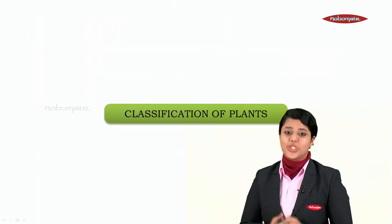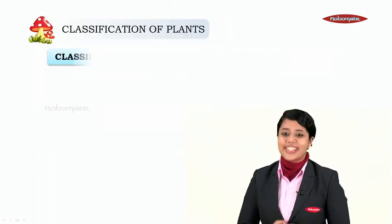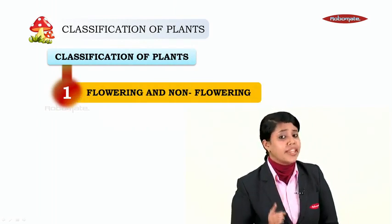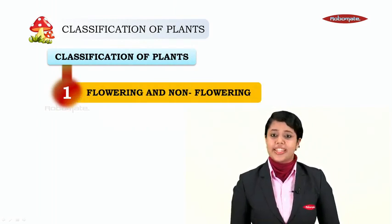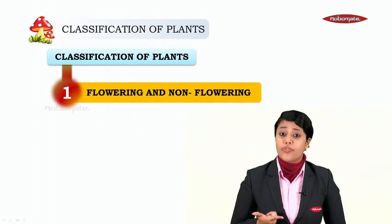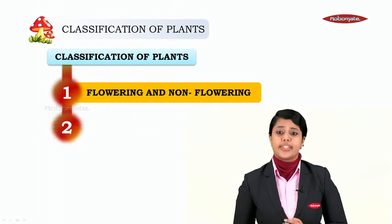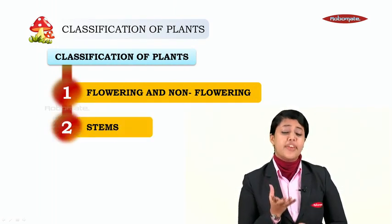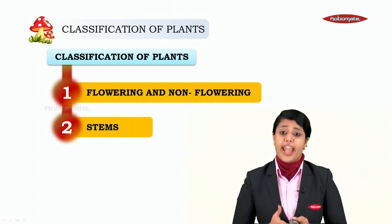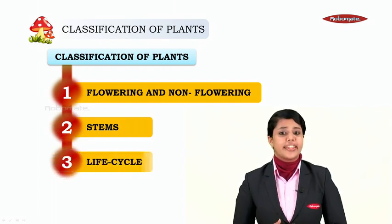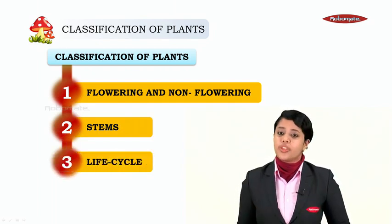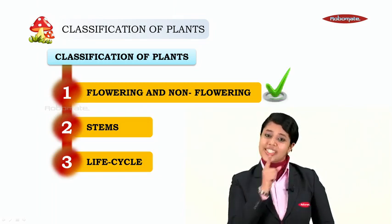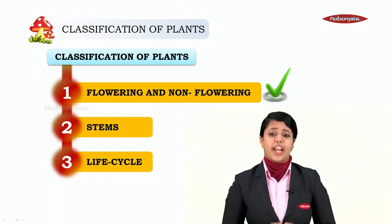Now we are going to study the classification of plants. The first method of classifying plants is into flowering and non-flowering plants. The next method is by the different stems they have, and the third is by the life cycle of the plants.